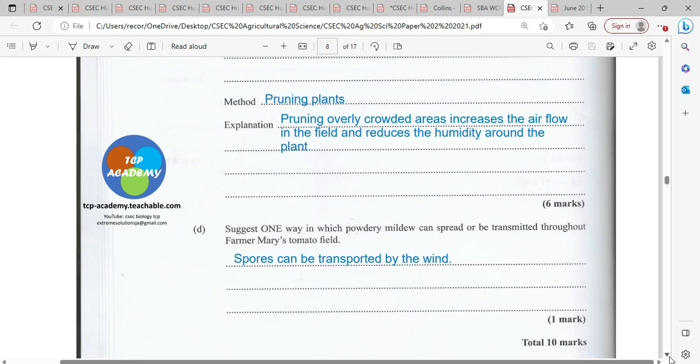State one way in which powdery mildew can spread or be transmitted throughout farmer Mary's tomato field. Spores can be transported by the wind, by animal, by contact, like we said, splash by water.